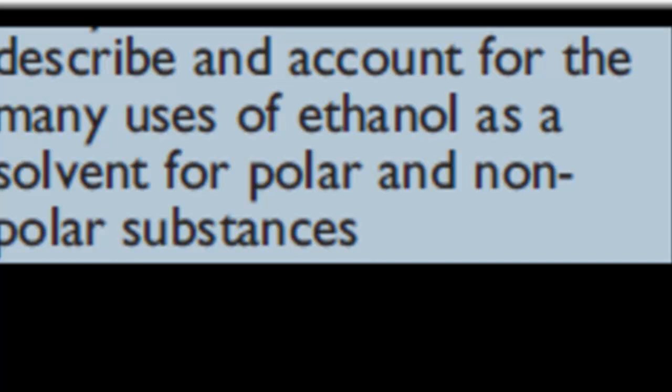Welcome back. In the last video we described dehydration of ethylene to ethanol — how if we add water and have a catalyst such as dilute sulfuric acid, we can make ethanol. In this video we're going to cover some of the reasons why we might want to make ethanol, and that reason is because ethanol is a really good solvent. That's one of the advantages of ethanol.